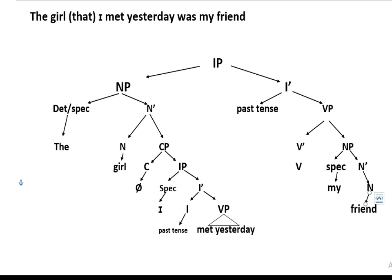Then we have the Complementizer Phrase, which is different. In terms of the complementizer phrase, sometimes you can have a complementizer and sometimes you cannot. For example: 'The girl I met yesterday was my friend', or 'The girl that I met yesterday was my friend'.